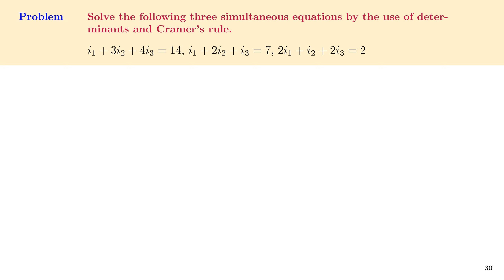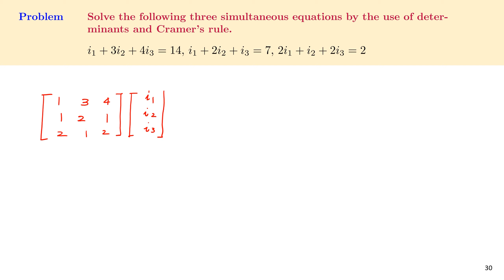Solving the three simultaneous equations using determinants and Cramer's rule: i1 plus 3i2 plus 4i3 equals 14, i1 plus 2i2 plus i3 equals 7, and 2i1 plus i2 plus 2i3 equals 2. In matrix form: [1 3 4; 1 2 1; 2 1 2] times [i1; i2; i3] equals [14; 7; 2].